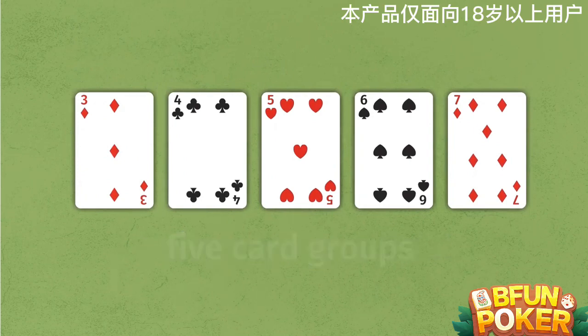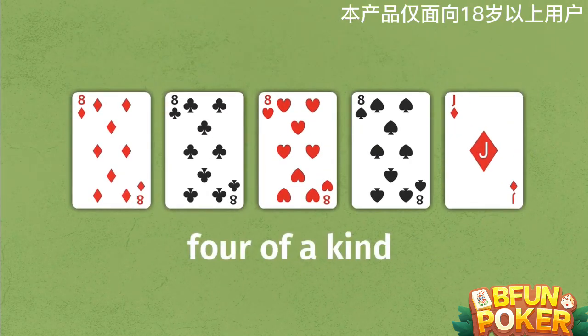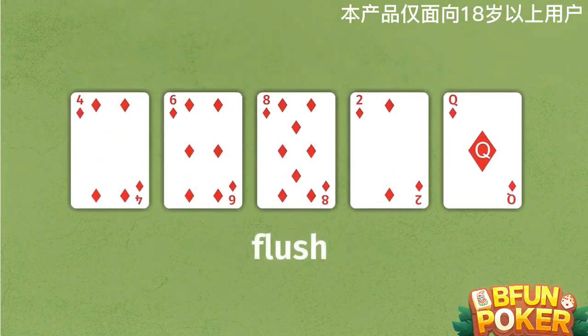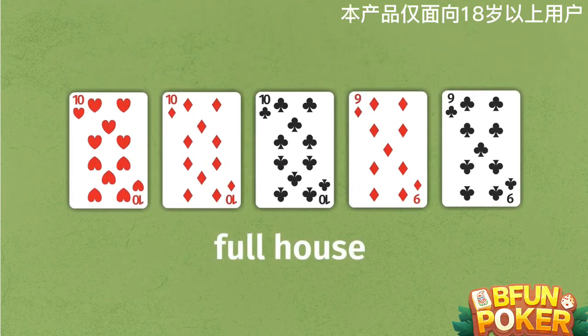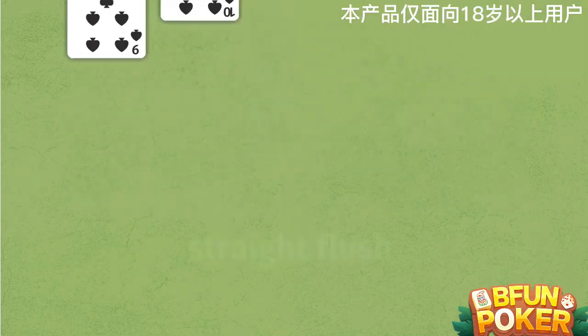A five card group can be a straight — five cards in ascending or descending order — four cards of the same rank with any other card, a flush — five cards of the same suit — or a full house — three cards of the same rank and two different cards of the same rank.